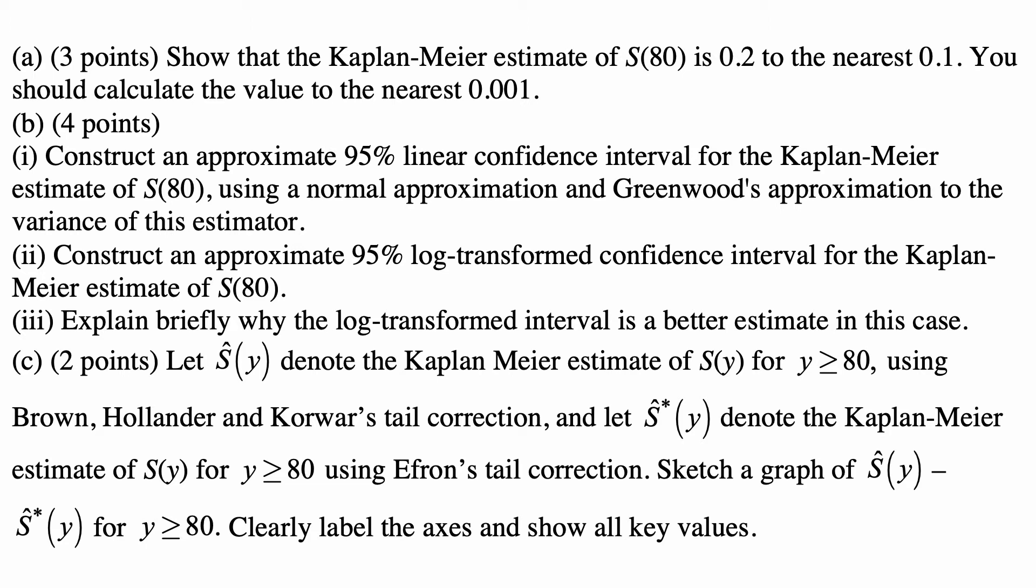Part B, Part 1: Construct an approximate 95% linear confidence interval for the Kaplan-Meier estimate of S(80) using a normal approximation and Greenwood's approximation to the variance of the estimator. Part B, Part 2: Construct an approximate 95% log-transformed confidence interval for the Kaplan-Meier estimate of S(80).